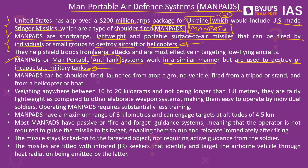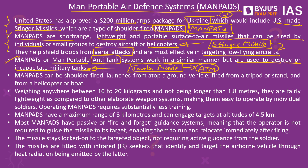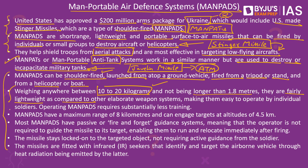MANPADS are very effective in tackling aerial threats by bringing down low-flying aircraft and helicopters, while MANTADS are very effective in targeting enemy battle tanks. The biggest advantage of these platforms is that they can be easily fired from the shoulder, launched from anywhere — atop a ground vehicle, from a tripod or a stand, or even from a helicopter or a boat. They weigh very little — roughly around 10 to 20 kilograms — and are not longer than 1.8 metres, making them relatively lightweight compared to other weapon platforms. They can be easily operated by a single soldier or by a small group of soldiers, and require very little training.